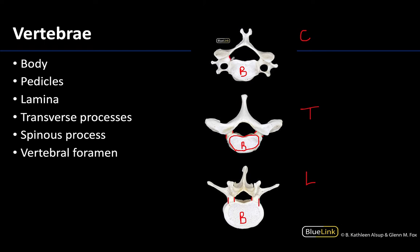You can see the pedicles in this region here. The pedicles are going to be part of that vertebral arch, and they will meet with the laminae. The laminae are these flat plates of bone — a little bit more complex when you're looking at the lumbar region. If the body is anterior, the laminae are going to be more posteriorly facing.